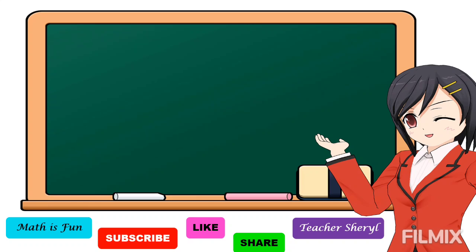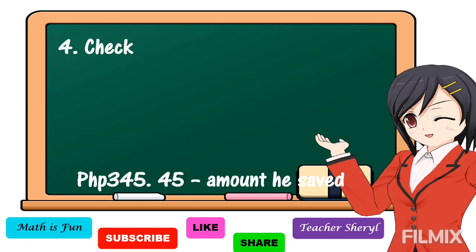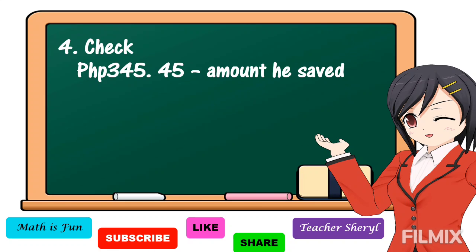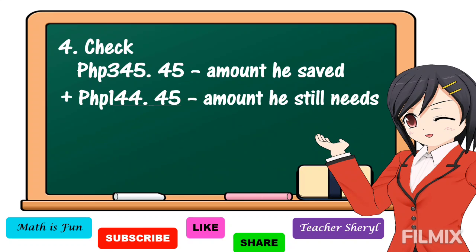This is the last step — we're going to check. In our solution we used subtraction, so to check we use the reverse operation, which is addition. We're going to add 345 pesos and 45 centavos — the amount he saved — and 144 pesos and 45 centavos — the amount he still needs. We add from right to left.